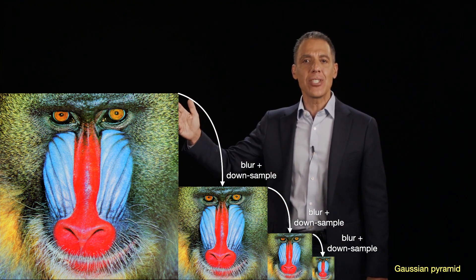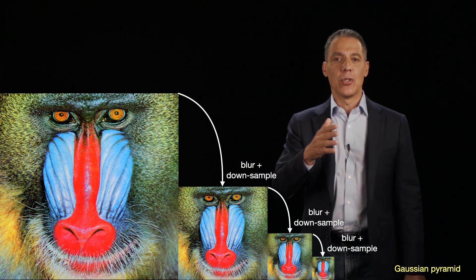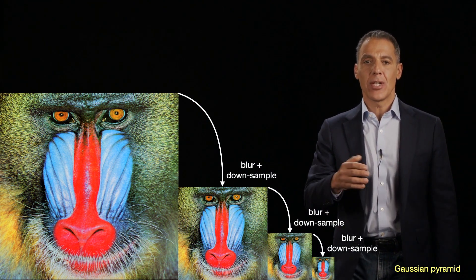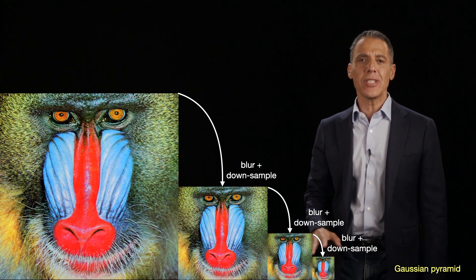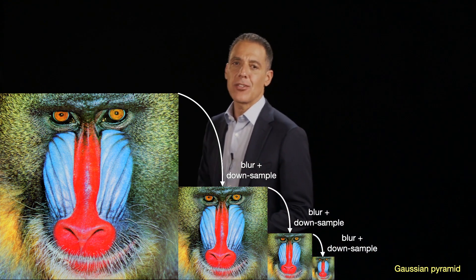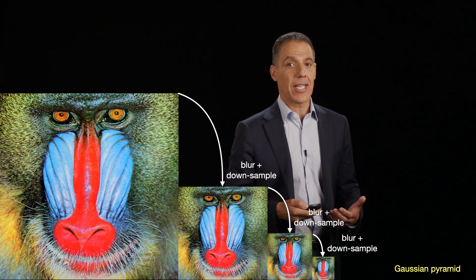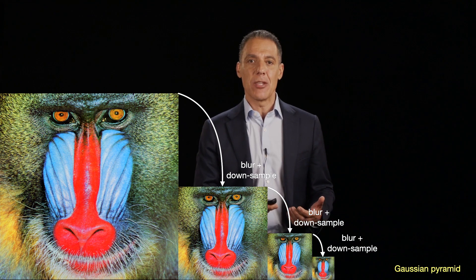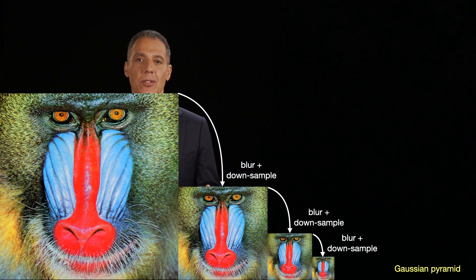What you see here are, by a factor of two, increasingly lower and lower resolution images. This one at the bottom is really tiny — you've lost a lot of information, but it's very small so you can do really fast calculations. This one is something in the middle, and then of course this is our full resolution image.